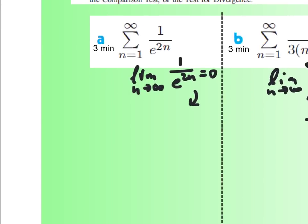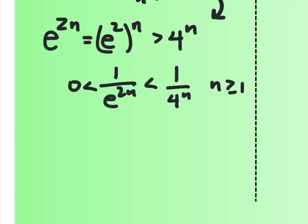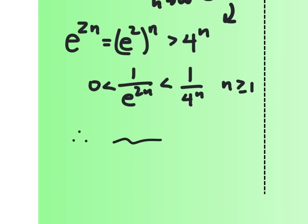I'll do a comparison test for this one. Note that e to the 2n equals (e squared) to the n, and since e squared is a little larger than 4, it's always greater than 4 to the n. Therefore, 1 over e to the 2n is less than 1 over 4 to the n, and greater than 0 for all n greater than or equal to 1. Therefore, since the series from 1 to infinity of 1 over 4 to the n is a convergent geometric series, the series from 1 to infinity of 1 over e to the 2n will also converge by the comparison test.